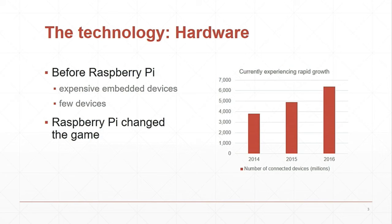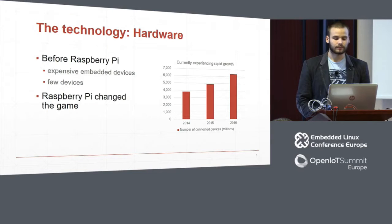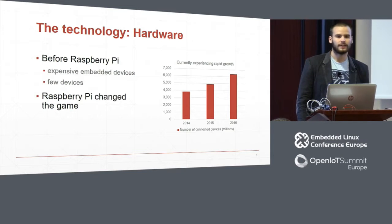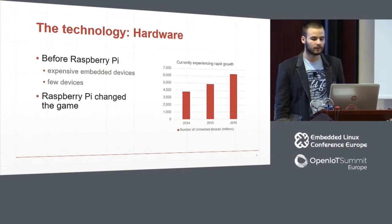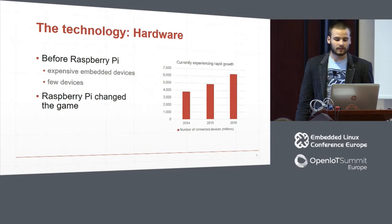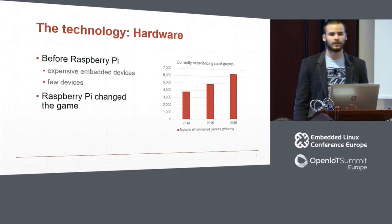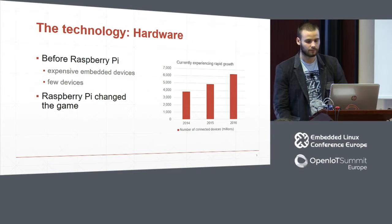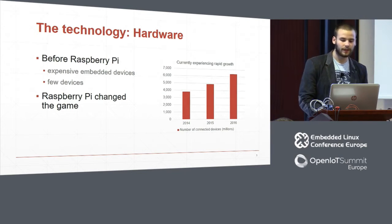First, before we talk about the software solution, we talk about the hardware. Before the Raspberry Pi appeared, there were very few embedded devices and very expensive. Why is that? Because the documentation was sparse, people didn't know what microcontroller to take. Raspberry Pi changed the game.